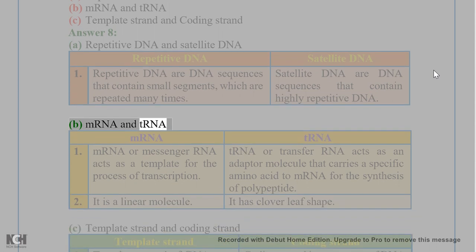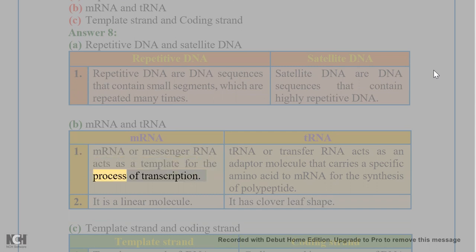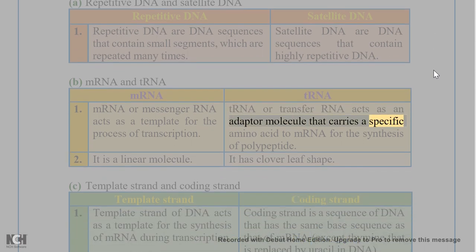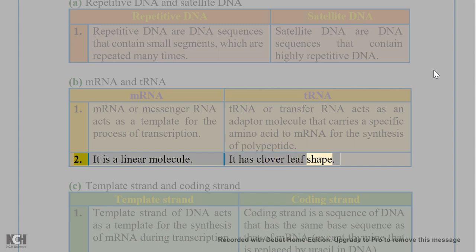B. mRNA and tRNA. mRNA or messenger RNA acts as a template for the process of transcription. tRNA or transfer RNA acts as an adapter molecule that carries a specific amino acid to mRNA for the synthesis of a polypeptide. mRNA is a linear molecule, whereas tRNA has a clover-leaf shape.